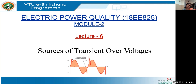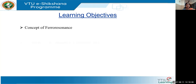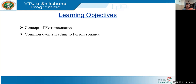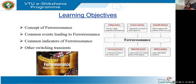The effect of ferroresonance gives rise to transients. We see a high spike of initial voltages — whenever it happens, there will be a high rise in voltage as well as in current. It is a very interesting topic. We are going to see exactly what is ferroresonance, the common events leading to it, common indicators, and what are the other switching transients. It is very much related to transformers.